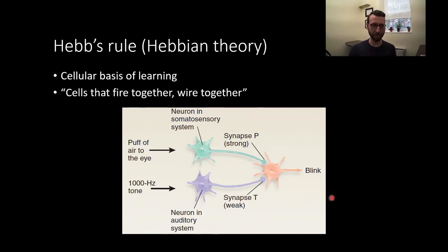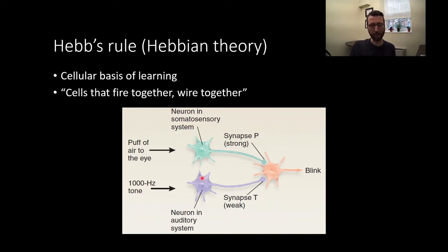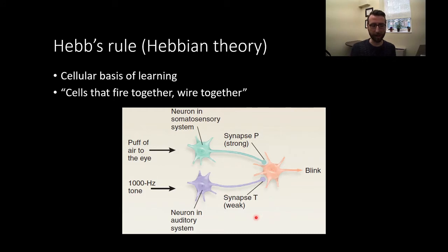This makes sense: if something touches your eye, you shut your eye — that's a strong synapse. If you hear a sound in your environment, you don't shut your eye. But with enough trials, you learn that the tone predicts something touching your eye, so you learn to shut your eye in response to that tone.